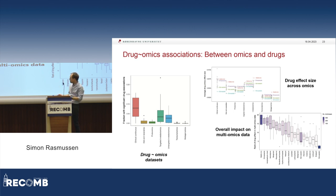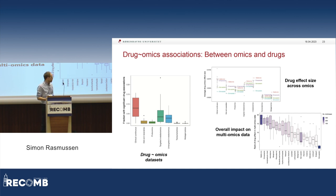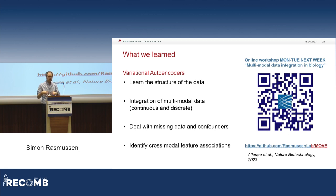We can also look across the different datasets. Here we look at the fraction of each dataset affected by a drug. The biggest fraction is in the clinical data, which makes sense since these drugs are supposed to impact clinical data. We can also look at the effect size of individual drugs across the different omics datasets, and finally rank them to give an impression of how much they actually influence the patient's state.